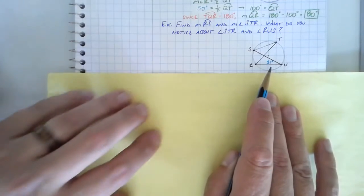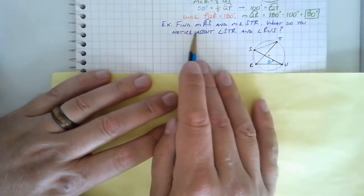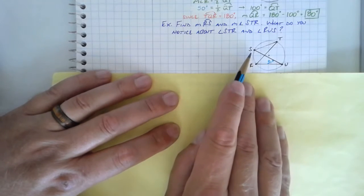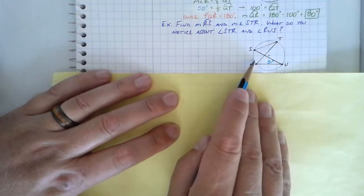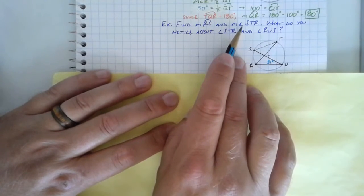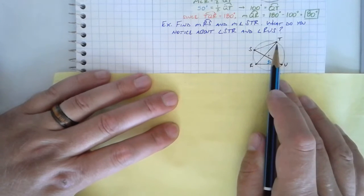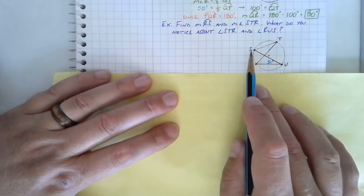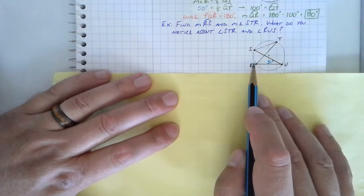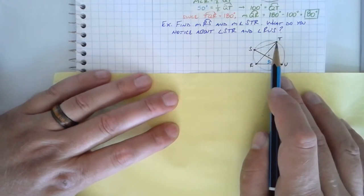I'm going to use this to solve the following. I need to find the measurement of arc RS. That's this guy right here. And the measurement of angle STR, which is really just can be shorthand for angle T. So I'm looking for the measurement of arc RS, which will be in degrees, and the measurement of angle T, which will also be in degrees.